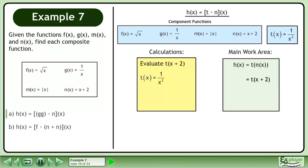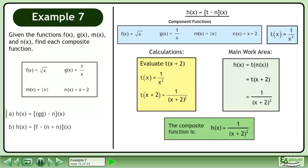We know that t equals 1 over x squared. So t equals 1 over x plus 2 squared. The composite function is h equals 1 over x plus 2 squared.